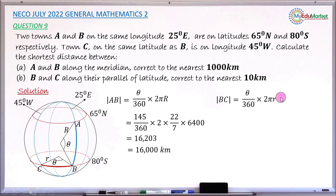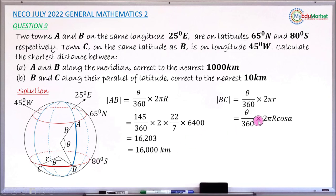We write an expression for the radius of the latitude in terms of the Earth's radius. The radius of a latitude circle is r = R·cos(α), where α is the angle of that latitude and R is the radius of the Earth. So small r is replaced by R·cos(α).